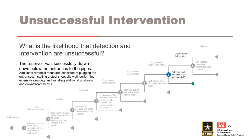Breach was averted only because the reservoir level dropped below the entrance to the pipes. This incident was a near miss with respect to failure. After the reservoir level was lowered, the entrances to the pipes were plugged. Immediate remedial measures consisted of installing a sheet pile wall through the closure section of the embankment, performing extensive grouting, and installing additional upstream and downstream berms.